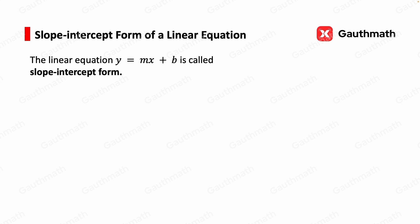The linear equation y equals mx plus b is called the slope-intercept form. m, which is the coefficient of x, is the slope, and b is the y-intercept.